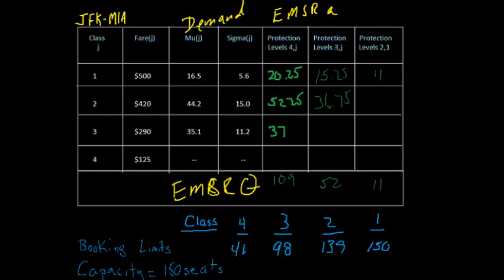The other thing that I wanted to point out is that there are no protection levels for fare class 4. And that makes sense, right? There are no fares below $125, so there's nothing to protect against. So there's no need to set a protection level. We just sell all seats that wouldn't be sold at a higher fare are available to be sold at the lowest fare in the market. And notice I didn't even include a demand forecast here. The demand forecast for the lowest fare class is never used in EMSR.